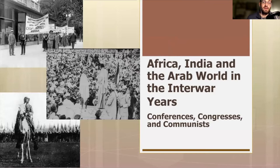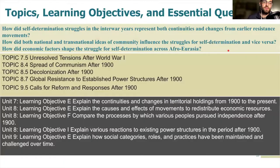It goes without saying that talking about half the world's population over the span of 20 years in a single presentation probably won't get to everything, but I'm going to do my best to talk about big picture changes and features. By the end of this presentation, you should be able to answer: How did self-determination struggles represent continuities and changes from earlier resistance movements? How did national and transnational ideas of community influence struggles for self-determination? And how did economic factors shape the struggle across Afro-Eurasia?